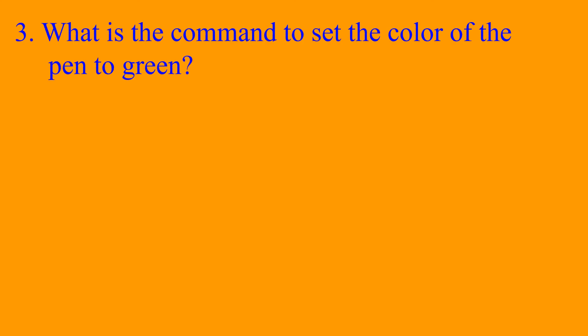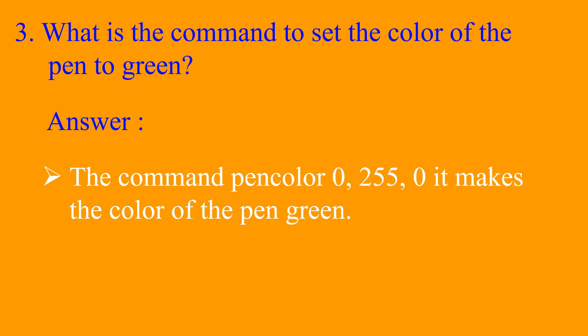Question number 3: What is the command to set the color of the pen to green? Answer: The command pen color 0, 255, 0 makes the color of the pen green. If 255 is in the first position, it makes the pen color red. If 255 is in the last position, it makes the color of the pen blue.